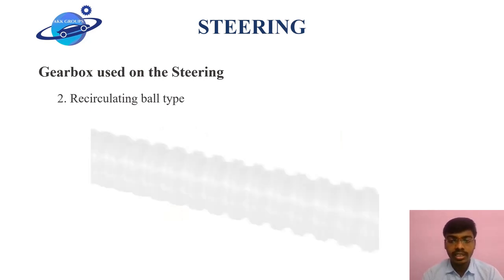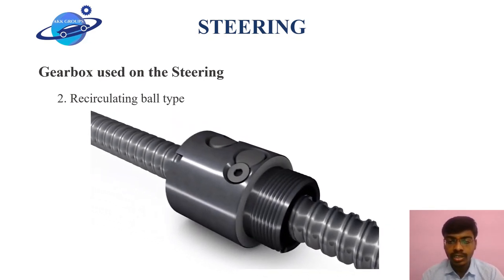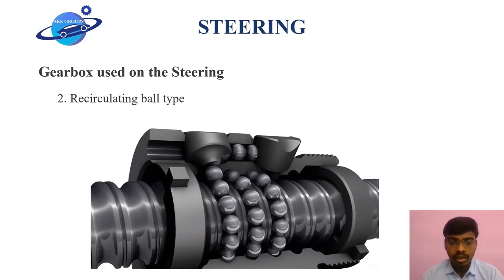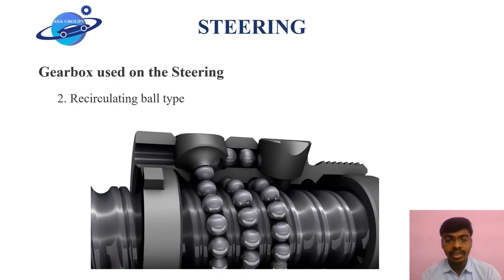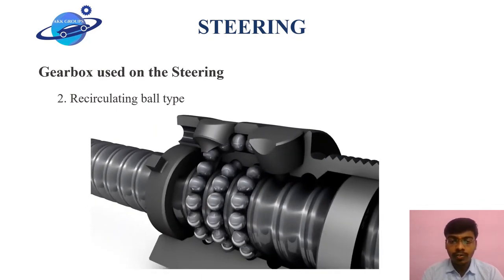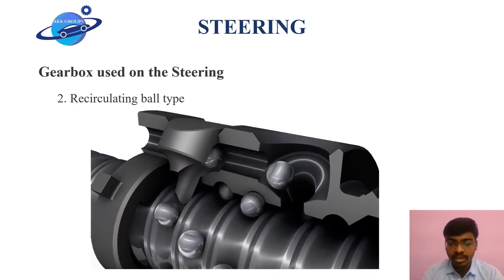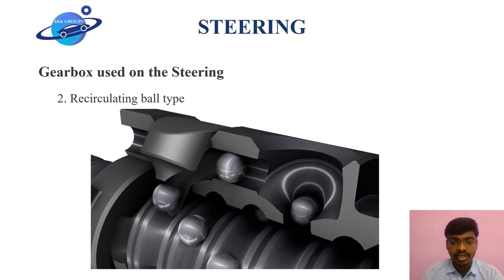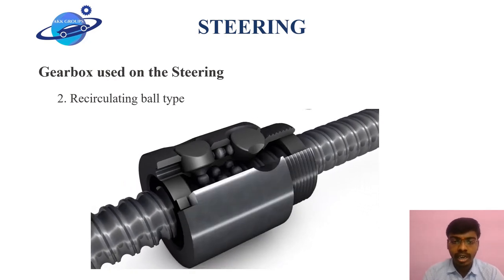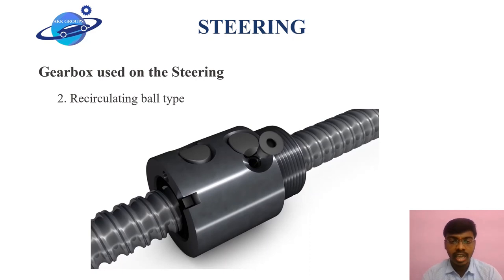Next we look at the recirculating ball type. This recirculating ball type has a worm shaft upon which a ball-circulating mounting is present. The overall working principle is the same as rack and pinion, except that the rack and pinion assembly is replaced by this recirculating ball mechanism. However, compared to rack and pinion, this type requires more maintenance and has a more complicated design.